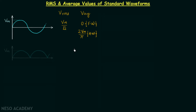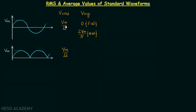Moving on to the second signal waveform: the full wave rectified sine wave. The RMS value of this waveform is equal to Vm over root 2, the same as the sine wave, and the average value is equal to 2Vm over pi.